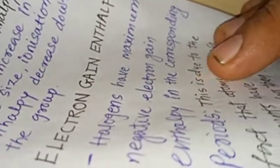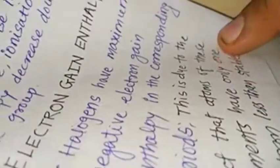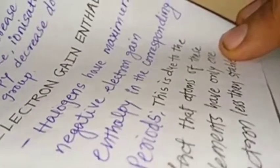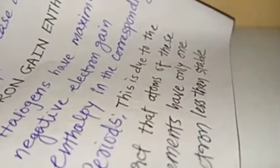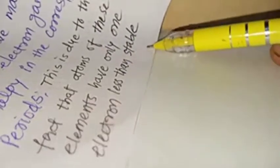Electron gain enthalpy: halogens have maximum negative electron gain enthalpy in their corresponding periods. This is due to the fact that atoms of these elements have only one electron less than stable electronic configuration.